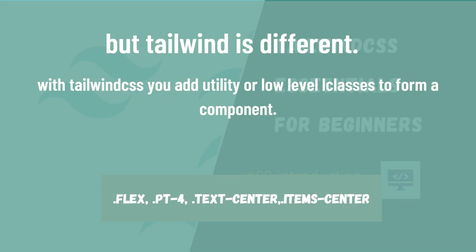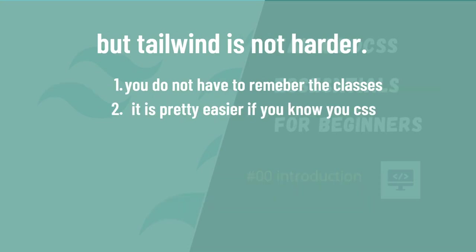With Tailwind CSS, you add utility or low-level classes to form components — for example, flex, padding-top, text-center, align-items-center. You might worry about remembering all these classes, but there's a VS Code extension made by the Tailwind team that makes it easy. When you type a class you can see awesome autocomplete, and when you hover over a class you can also see the style rule.